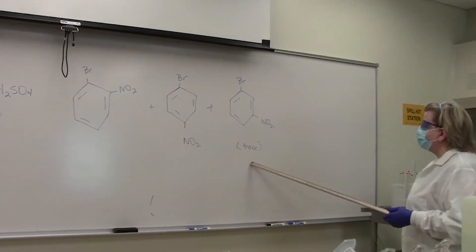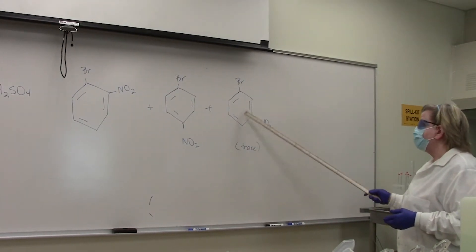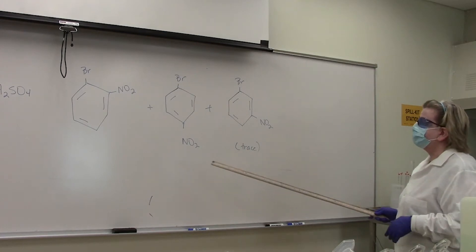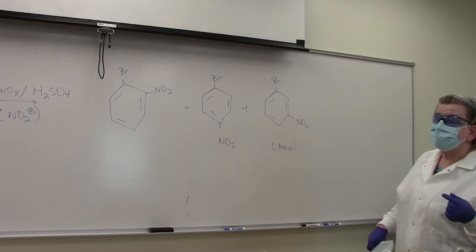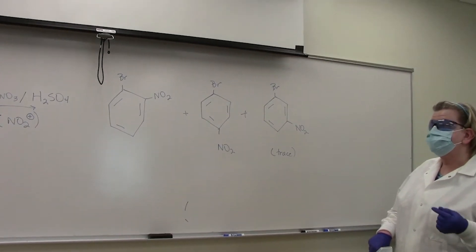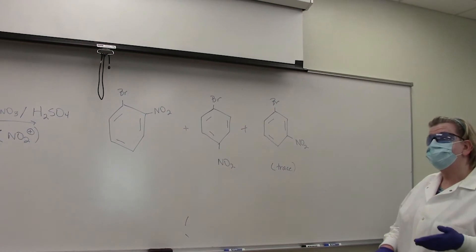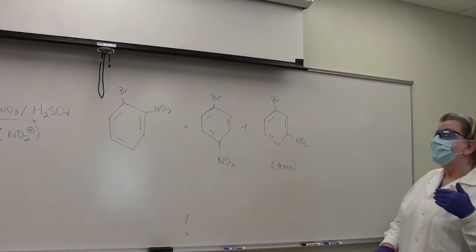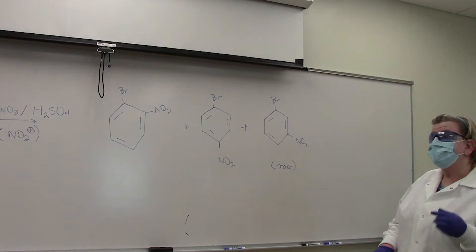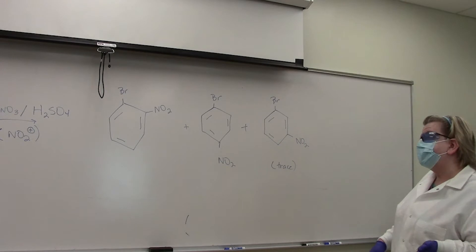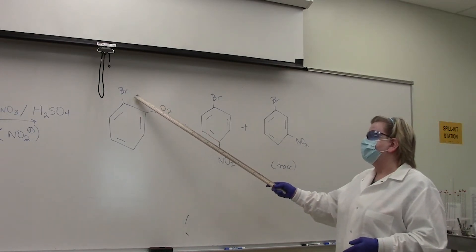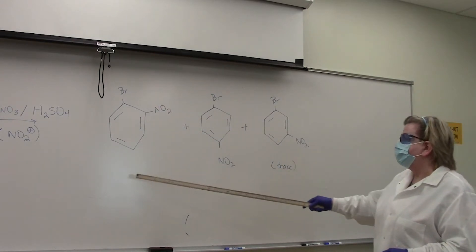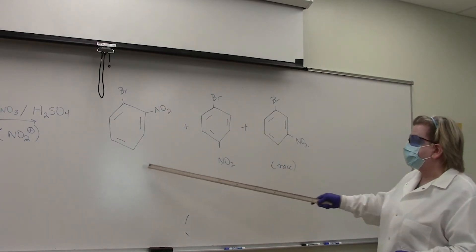If you notice here I've only put down trace - very rarely do you get much of the meta product at all. When you look at bromine, halogens overall are considered to be deactivating groups, which means they slow the reaction down. Most deactivating groups are meta directors, but bromine and the halogens, because of how they stabilize the arenium ion in the reaction mechanism, will direct incoming groups ortho and para. These are the two products we're looking at mostly for today.